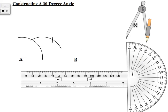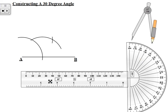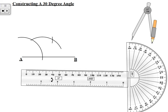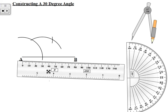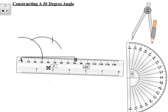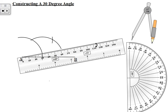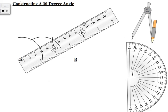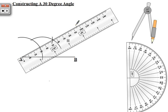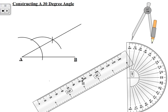We're going to draw a straight line through that last intersection and the point A. That line will create a 30-degree angle with the line AB at the point A. We'll just draw that line through the last intersection and the point A. There we have the line.